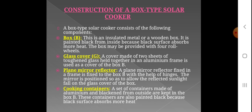The glass cover is made of two sheets of toughened glass held together in an aluminum frame. It is used as the cover or main lid of the box, fitting the aluminum frame securely.